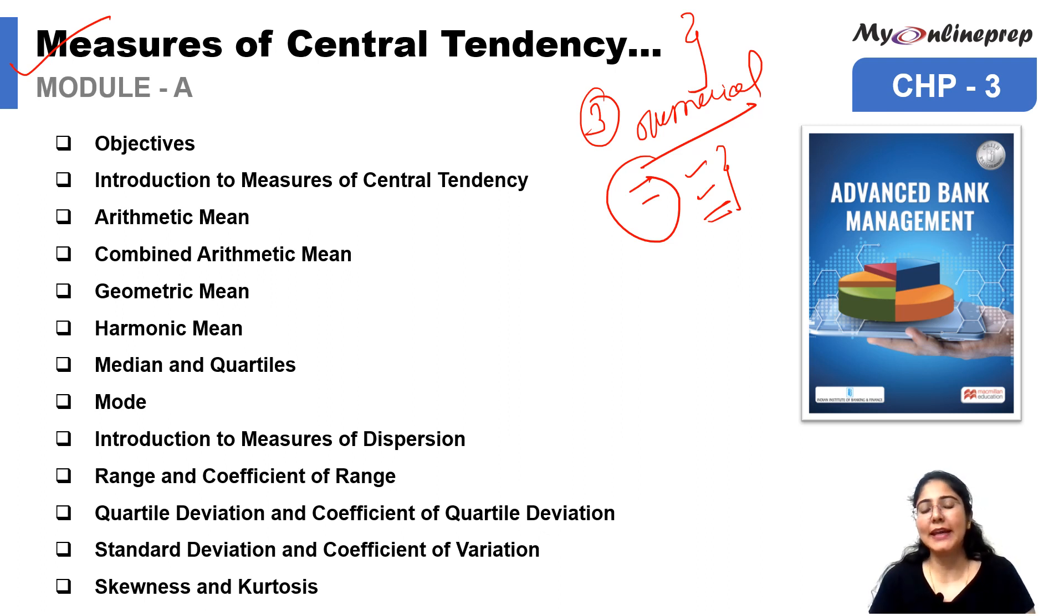In this chapter, we have to study about objectives, introduction, arithmetic mean, combined mean, geometric and harmonic mean, median and quartiles, mode, measures of dispersion, range and its coefficient, quartile deviation with its coefficient, standard deviation and coefficient of variance, and lastly skewness and kurtosis. Let's start today's class with some very important MCQs which are concerned with chapter 3, Measures of Central Tendency.